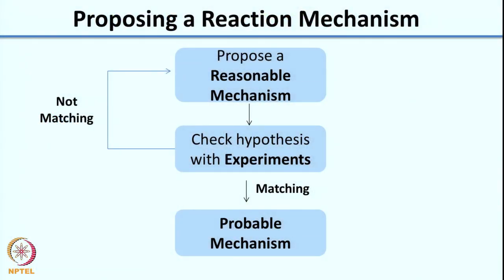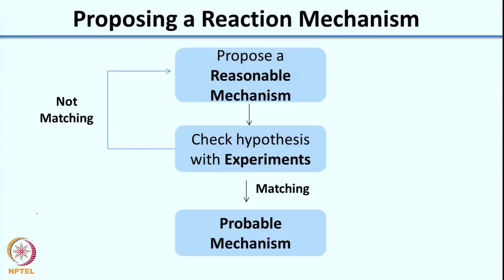Once you do the experiment, you check whether the result matches the hypothesis. If the hypothesis matches the experiment, then you can say this is the most probable mechanism. If it does not match, you go back, propose a new reaction mechanism, and again check with experiments. This is a continuous cycle: propose a mechanism, check the hypothesis, and if it does not work, keep repeating until you get a good mechanism.